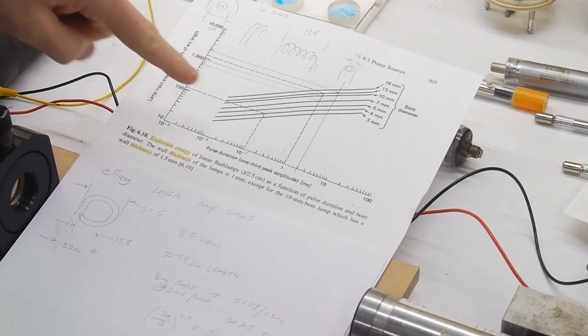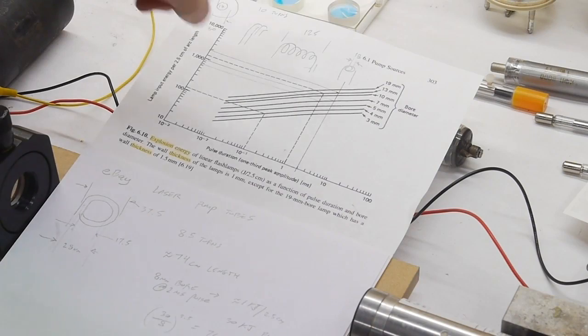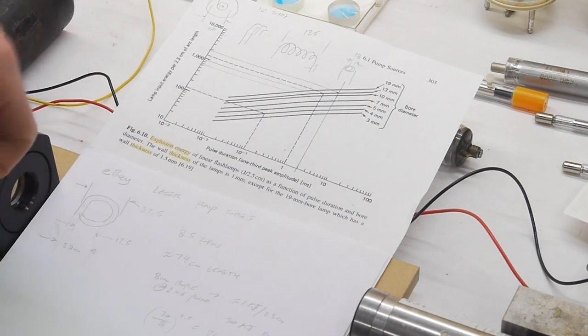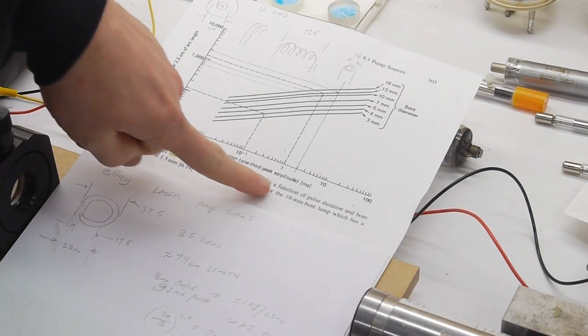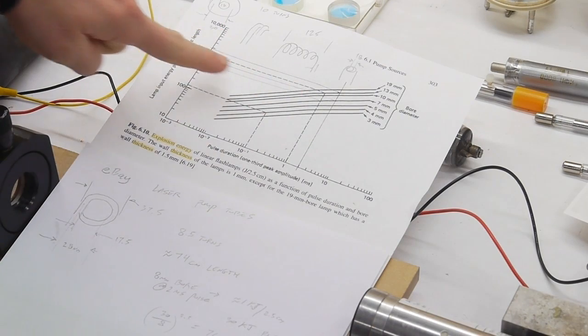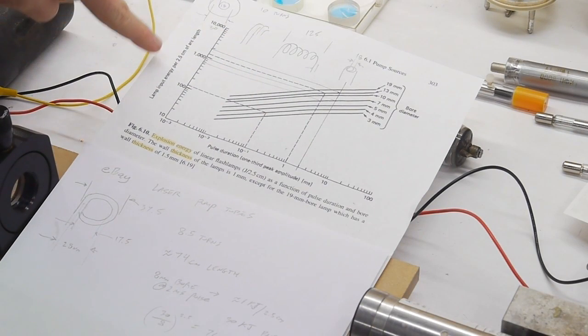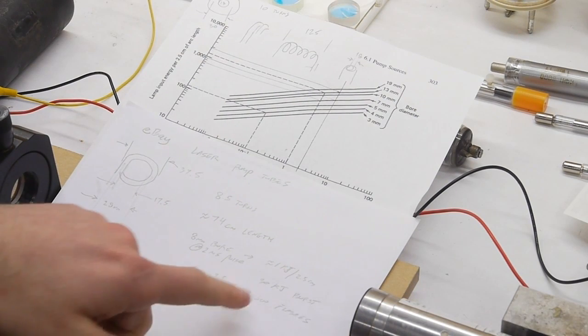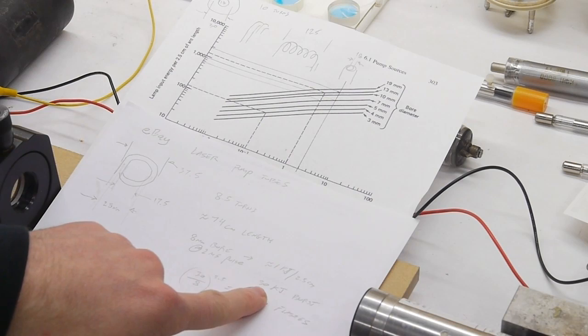So this chart here helps us calculate what the explosion energy would be for that tube. We look up the bore diameter, which in this case is about 8mm, and the pulse duration, one third of peak amplitude in milliseconds. So let's say our pulse is going to last one and a half or maybe two milliseconds. We can look that up on the chart and then look over and it will tell us how much energy we can have per length of flash tube. So this comes out to be somewhere on the order of 1 kilojoule per inch of flash tube. And since this is a helical flash tube we get to figure out how long it is just by calculating the circumference and multiplying by the number of turns. And as it all comes out, we end up with about a 30 kilojoule burst energy or explosion energy.